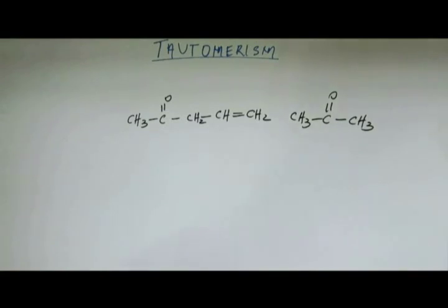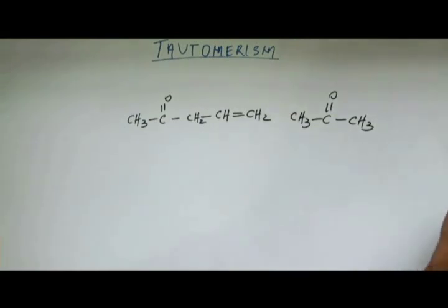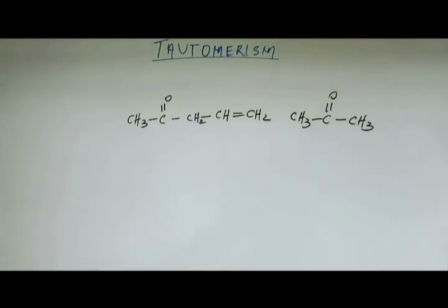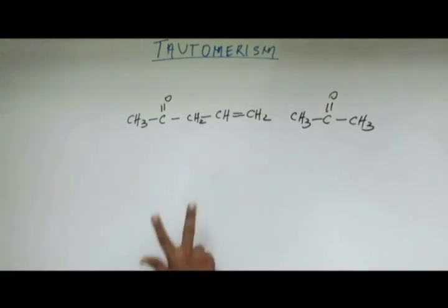We have been asked to compare the enolic content of two keto forms and to draw the enolic form of these two keto forms. For acetone we have already done this; now for the given substrate we will do it. The first thing to learn is how to draw the enolic form of this keto compound, so we will begin by drawing the enolic form of this substrate.